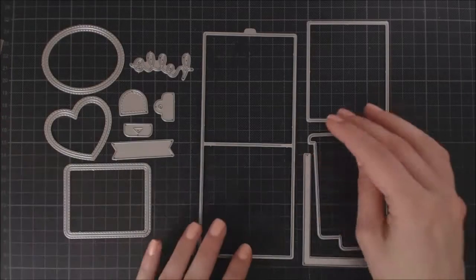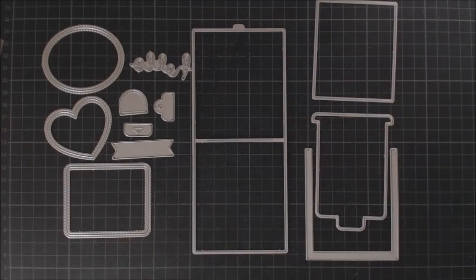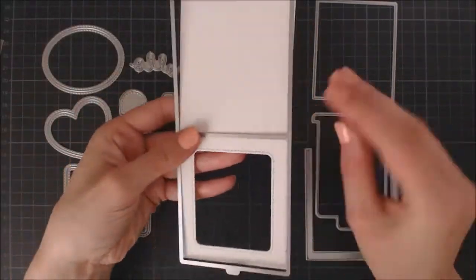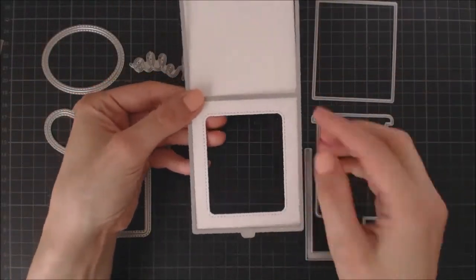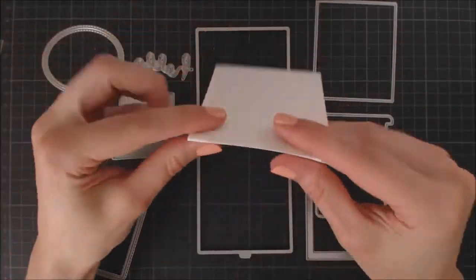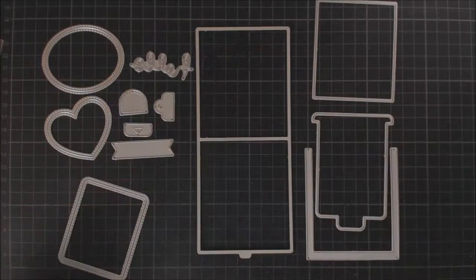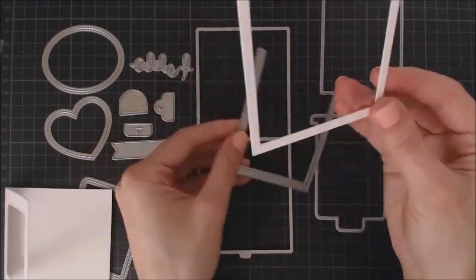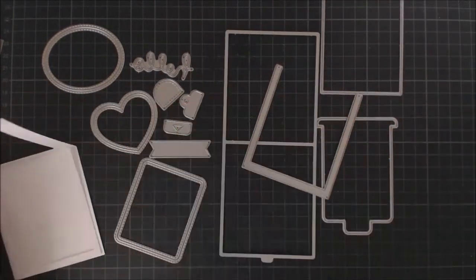To create the magic slider pocket for my card, I'm going to be using the magic color slider dies by Lawn Fawn because they make the process really easy. So, I went ahead and die-cut the pieces that I need using my die-cutting machine and some Bristol smooth paper.